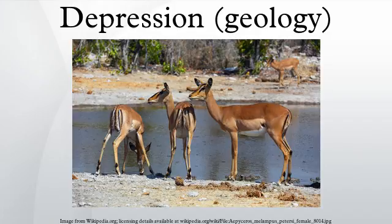A river valley is a depression carved by fluvial erosion by a river. Area of subsidence caused by the collapse of an underlying structure, such as sinkholes in karst terrain. A sink is an endoheic depression generally containing a persistent or intermittent lake, a salt flat or dry lake, or an ephemeral lake.